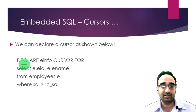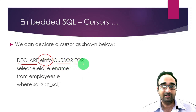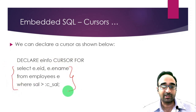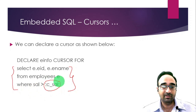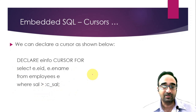Here is how you create the cursor. You write: 'DECLARE e_info CURSOR FOR' followed by an SQL SELECT statement. Here the cursor name is 'e_info', meaning employee info. The SQL statement selects employee ID and employee name from the employees table aliased as 'e', where salary is greater than ':C_sal'. The variable ':C_sal' comes from C language using the colon prefix, whereas the table and column names belong to the DBMS. This creates a cursor named e_info.